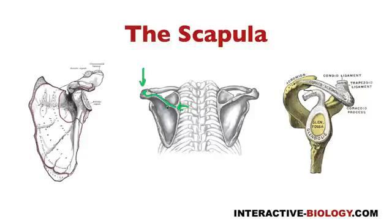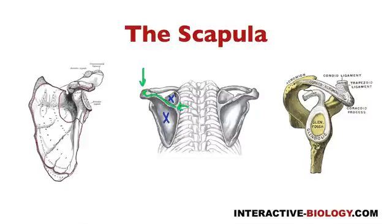Conveniently, there's a space above and below the spine. The fossa above the spine we call the supraspinous fossa — 'supra' meaning superior, and 'spinous' referring to the spine. Below that we have the infraspinous fossa — 'infra' referring to inferior. If we flip this around and look at the anterior surface, we have the subscapular fossa. So: supraspinous fossa, infraspinous fossa, and subscapular fossa.